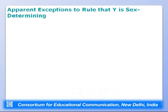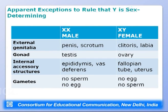XX males had external genitalia, gonads, and internal accessory structures all characteristic of males — penis, scrotum, testes, epididymis, and vas deferens — but were sterile, producing neither sperm nor eggs. Similarly, XY females were identified: they had clitoris, labia, ovaries, fallopian tubes, and uterus but were also sterile with no gamete production.